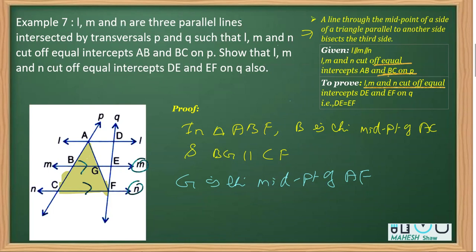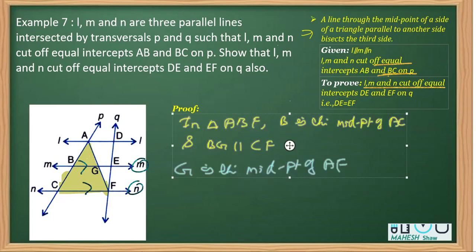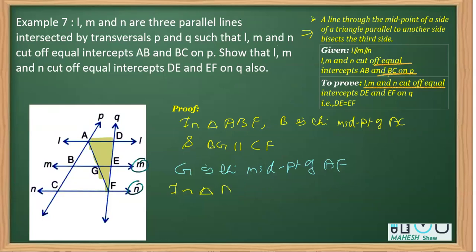Now, after that, we will consider another triangle. Let's say I consider another triangle here. This time, I'll be considering this triangle, that is ADF. Now, so we'll continue to write same thing. In triangle ADF, we have G is the midpoint of AF.